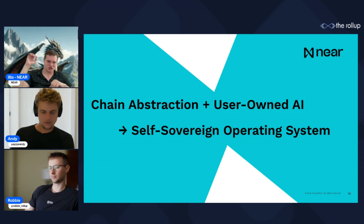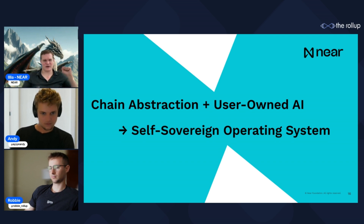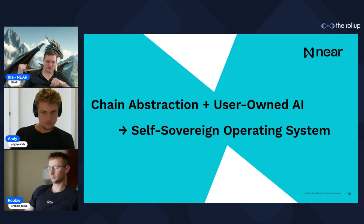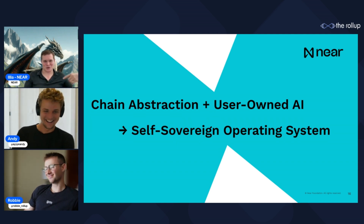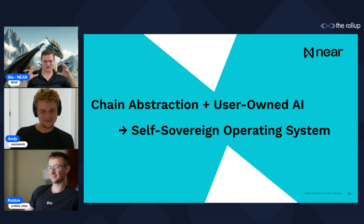We have a bunch of projects now that are generating UX and UIs from your description, or letting you type in 'mint me an NFT' or 'swap a token' and executing the transaction for you. There's also Shill GPT — you deposit your meme coins and it shills to buy more. There's an LLM behind it that scores whether it should be buying or not and whether you convinced it. All those pieces are coming together into this vision of a self-sovereign operating system. I have a whole talk at ETH Denver about that.